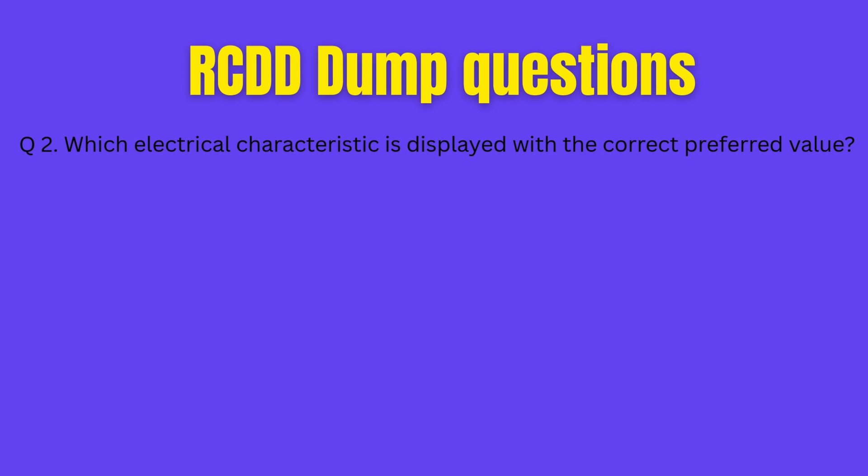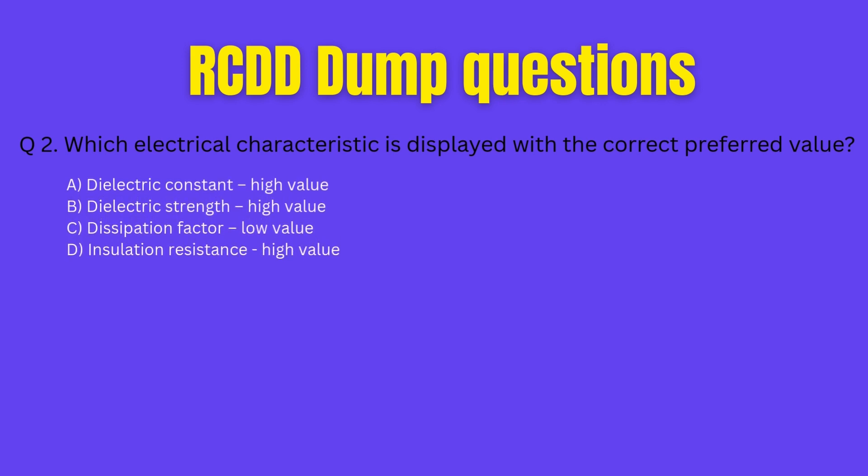Question 2. Which electrical characteristic is displayed with the correct preferred value? A. Dielectric constant, high value. B. Dielectric strength, high value. C. Dissipation factor, low value. D. Insulation resistance, high value. Think carefully, your 20 seconds start now.